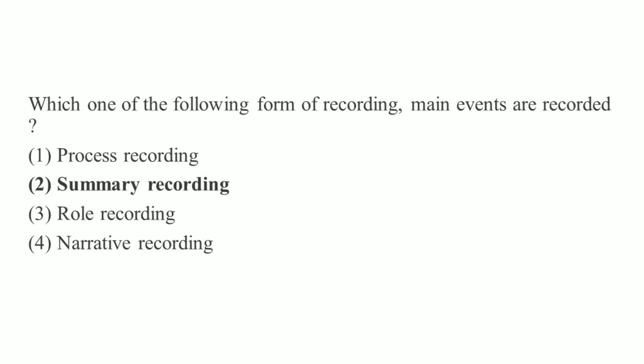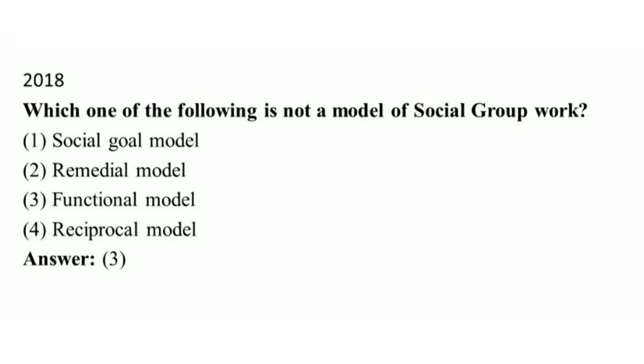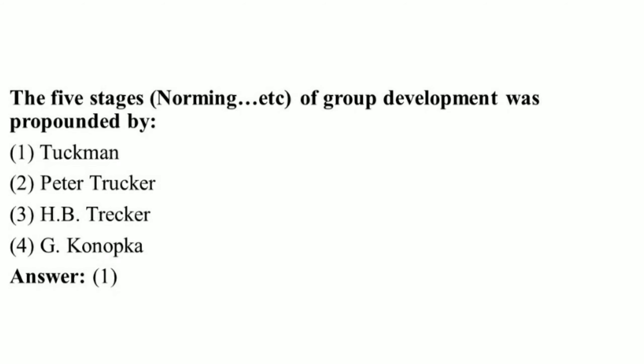Which one of the following forms of recording where main events are recorded? Right answer: option 2, summary recording. H.B. Trecker said that each individual has one need the worker should be aware of: right answer option 3, recognition. From the 2018 UGC NET examination: which one of the following is not a model of social group work? Right answer: option 3, functional model. The principle of specific objective is a principle of: right answer option 2, social group work.